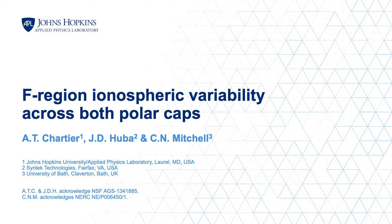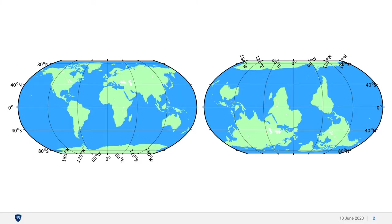Today we will address F-region ionospheric variability across both polar caps. Both of these maps are equally valid physically, but we spent a lot more time looking at the Northern Hemisphere. In the past, people have drawn conclusions from Northern Hemisphere observations and then assumed that the Southern Hemisphere is the same except separated by 6 months.